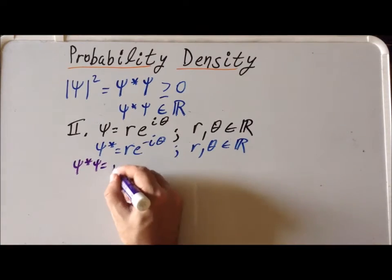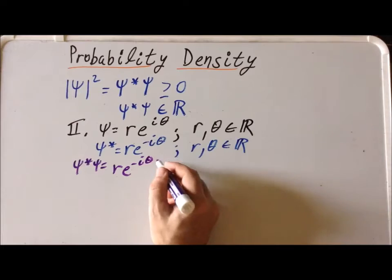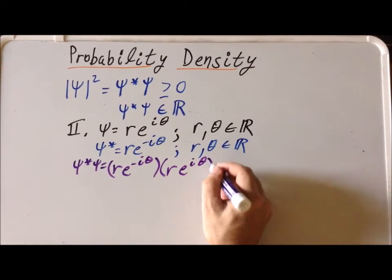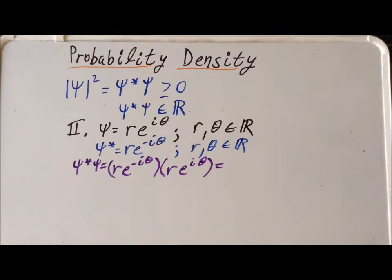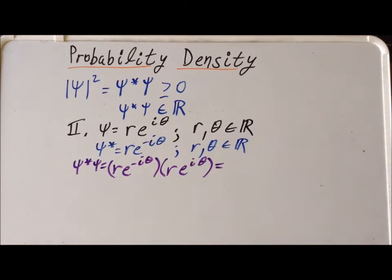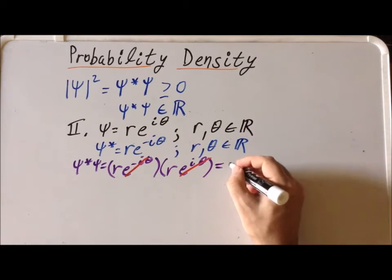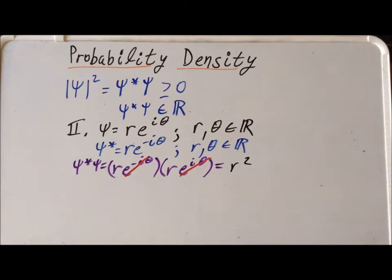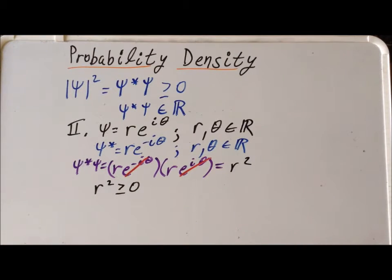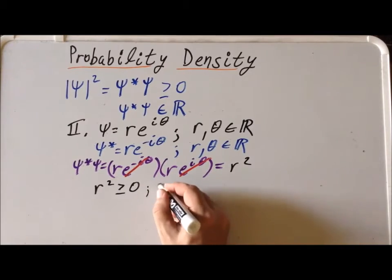Now we want to form the product — the probability density — psi star psi. Psi star is r times e to the minus i theta, and psi is r times e to the i theta. Something very nice happens here: e to the minus i theta times e to the i theta gives us e to the zero, which is simply one. So these two exponential terms drop out, and we're left with the product being simply r squared. Since r is a real number, r squared has to be greater than or equal to zero. And since r is a real number and the real numbers are closed under multiplication, r squared is an element of the reals.